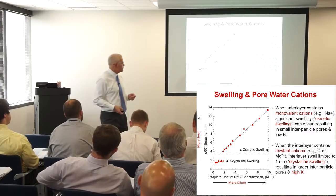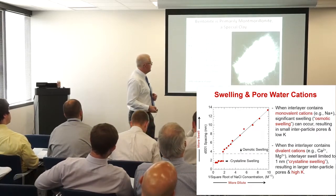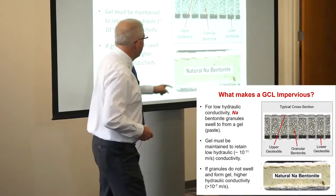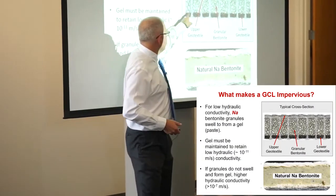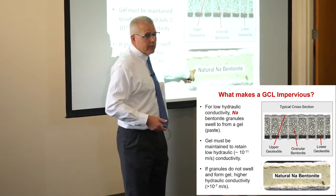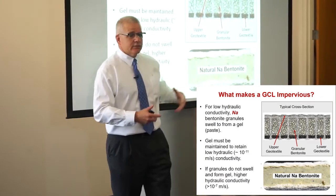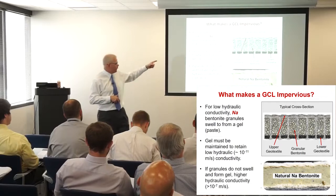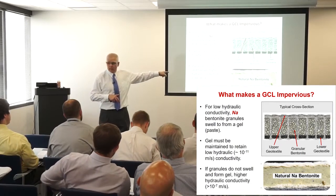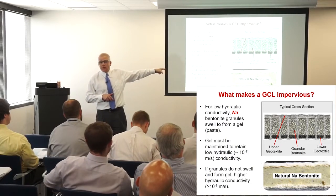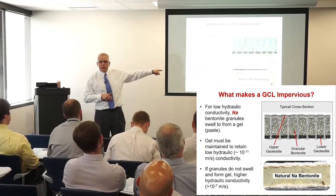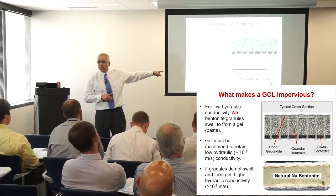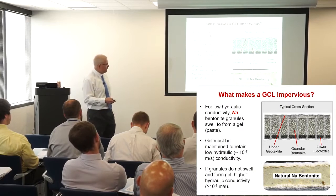Why is that important? Going back to that slide — we have to transform the bentonite from a granular structure to an essentially amorphous gel. That's the osmotic swelling phenomenon. If we go from that granular structure to that amorphous gel, it's impervious. And we only get that if we get osmotic swelling. If it's only crystalline swelling, that transformation doesn't happen.